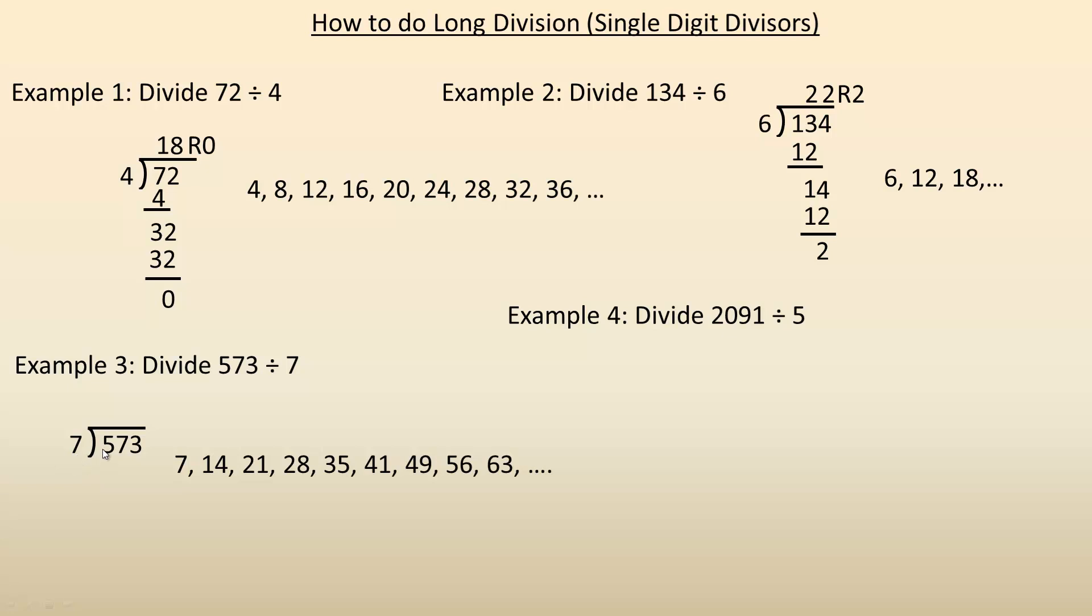So then you say, well, next, let's include the 7 here, so it's 57, not just 5. How many times does 7 go into 57? Well, 57 is a lot bigger than 7, so we need several multiples. So 7, 14, 21, 28, 35, 41, 49, 56.